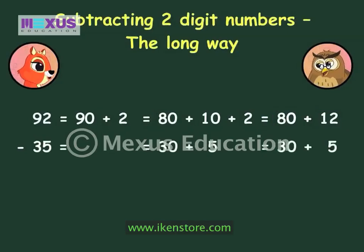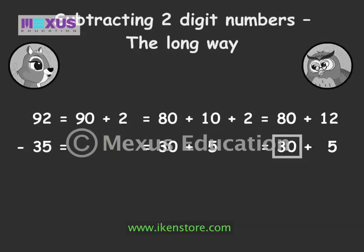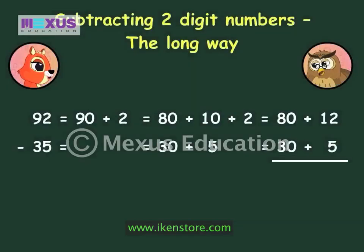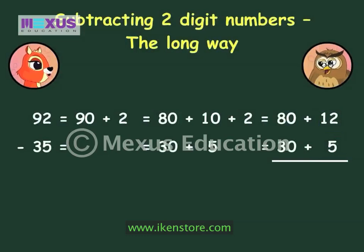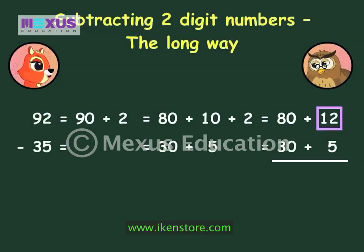And now we regroup 35 as 30 plus 5. Now, as you can see, 5 is smaller than 12. So we can subtract them. So 12 minus 5 is 7.